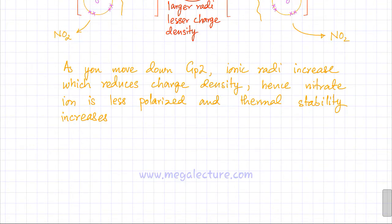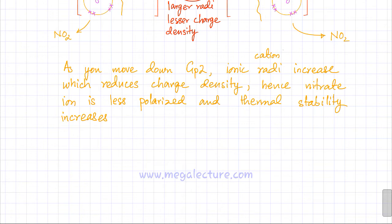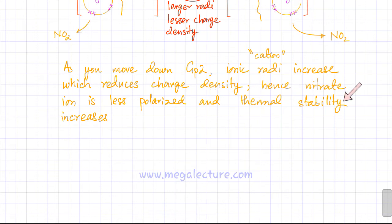The last thing I'll tell you is what to write in the exam if a question about the stability of group 2 nitrates comes up. The statement to write is: as you move down group 2, ionic radius of the cation increases — the nitrate remains pretty much the same, it is the positive metal cation whose radius is increasing. Since the radius increases, this reduces the charge density. Hence, the nitrate ion is less polarized down the group, and therefore thermal stability increases. Use this same terminology in the exam paper.